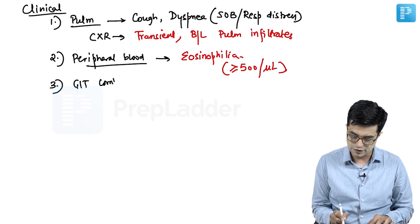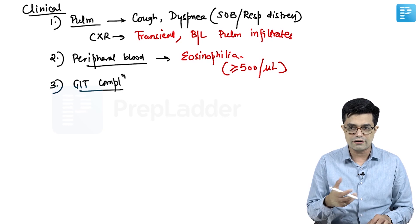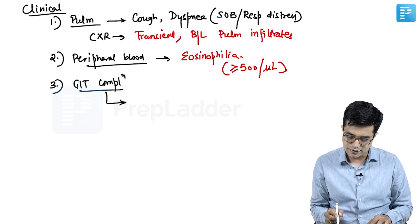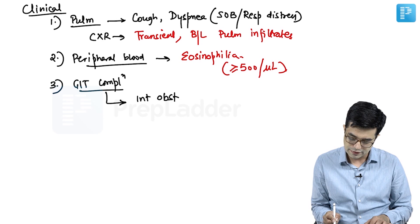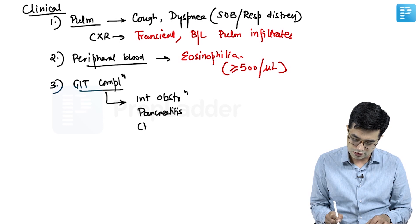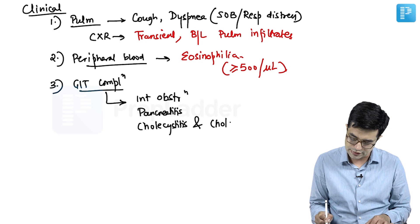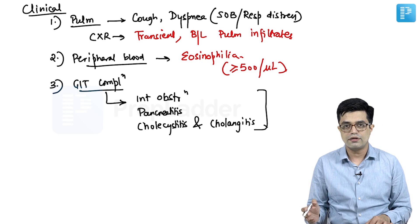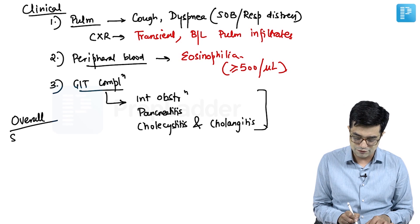These patients also tend to develop GI complications because live worms are moving around in the intestine. Mature forms reaching back into the intestine can block the intestine leading to intestinal obstruction. They can block the ampulla of Vater leading to pancreatitis, or obstruct the biliary tree producing cholecystitis and cholangitis. These are the complications which can develop in patients with Loeffler syndrome.